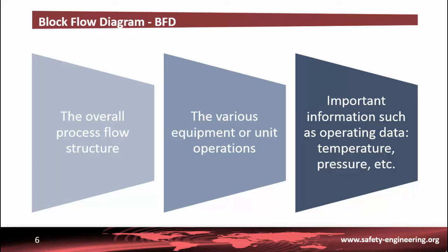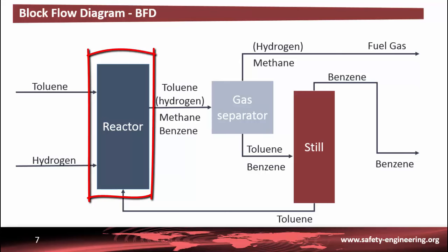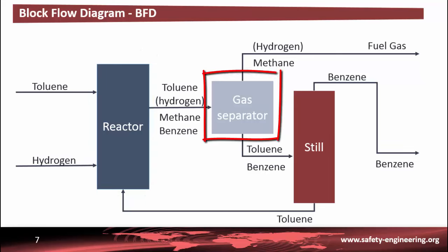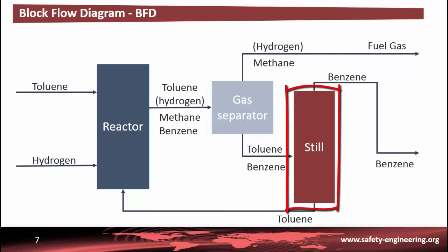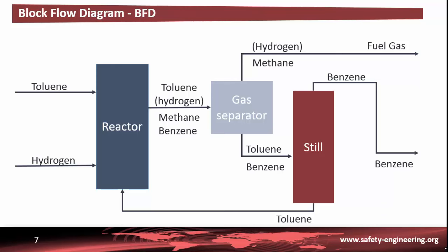However, the diagram does not include any details of equipment within any of the blocks. This figure shows the block flow diagram for the production of benzene. Toluene and hydrogen are converted in a reactor to produce benzene and methane. The reaction does not go to completion and excess toluene is required. The incondensable gases are separated out and discharged. The benzene product and the unreacted toluene are then separated by distillation. The toluene is then recycled back to the reactor and the benzene is removed from the product stream. Note that no instrumentation or actuators are shown on the BFD diagrams.